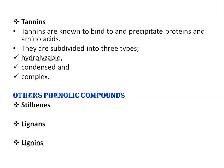Other phenolic compounds include stilbenes, lignans, and lignins. Stilbenes are phenolic compounds in which two phenol units are linked by two double-bonded carbons. Lignans consist of two phenol units linked by four carbons, and lignins consist of phenolic compounds that are linked with each other by carbon chains.